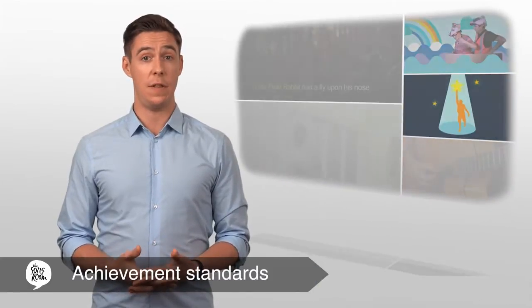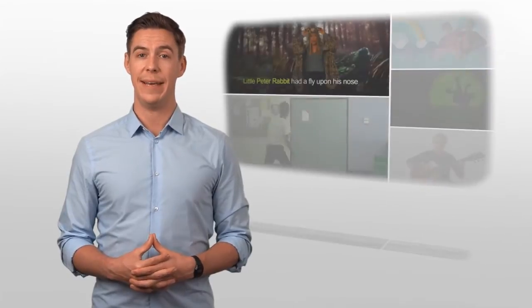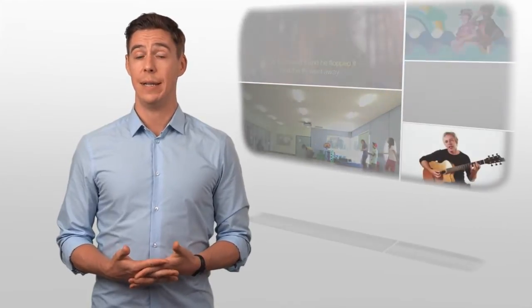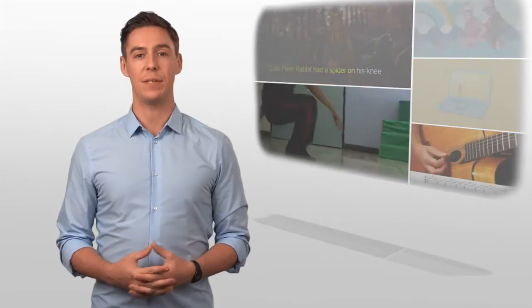Content descriptions are supported by elaborations that provide guidance on how you can deliver the content and meet achievement standards. Achievement standards define the type and depth of learning students should achieve by the end of each year band. They provide you with guidance in understanding the relationship between the strands, the expected outcomes relevant to each art form, and requirements for assessment.